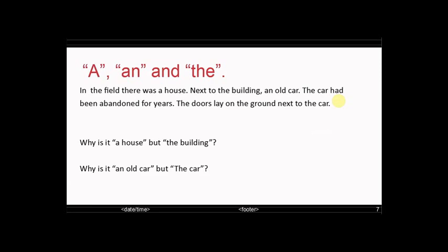So let's look at this for an example. In the field there was a house. Next to the building, an old car. The car had been abandoned for years. The doors lay on the ground next to the car. So if we look at this, why is it a house but the building? And then next to the building, an old car, then the car had been abandoned for years. So why an old car but then the car? Is this about being specific or being general? Let's take a look.